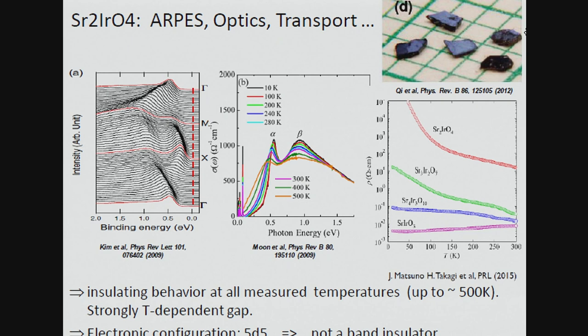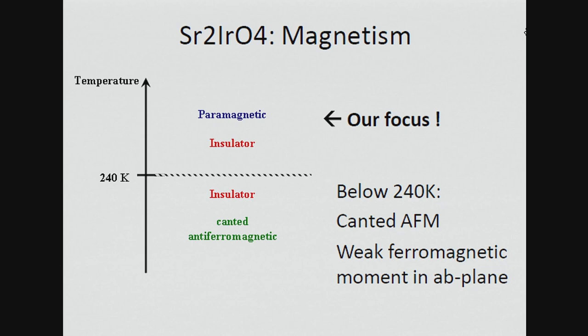What is clear is that the compound is insulating at all temperatures. You see it in photoemission — a gap at the Fermi level — in the optical conductivity, and in transport. Insulating at all temperatures is important because in particular there is a magnetic transition at about 240 Kelvin, but essentially nothing happens in the resistivity at that temperature. Below the transition is a canted antiferromagnetic phase; above it's a paramagnetic phase, but everything is insulating. Our focus will be in particular on the paramagnetic phase at high temperature.